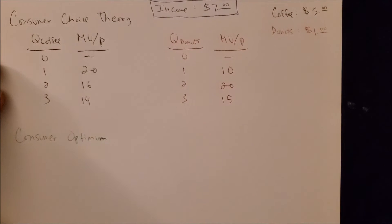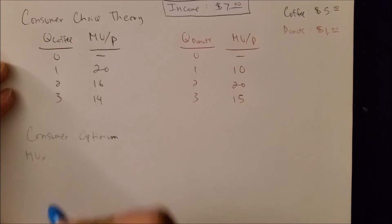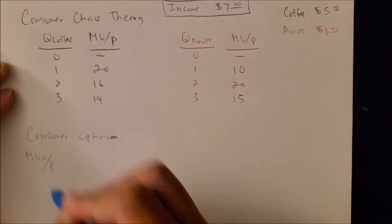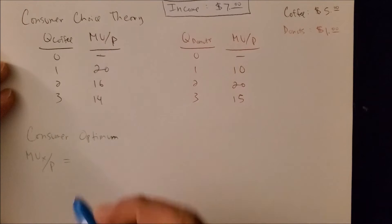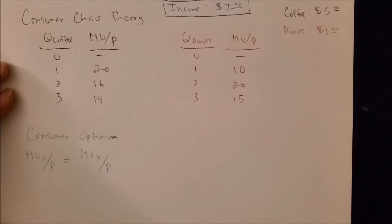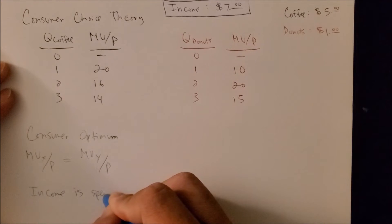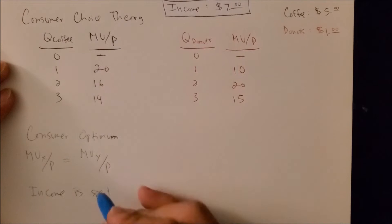When you think about consumer optimum, it looks at two or more goods where we are able to completely use all of the income we are given, and the last unit consumed is going to equal each other. In other words, consumer optimum is given in this expression: the MU of one good over price equals the MU of another good over price—the last unit consumed—and all of the income is spent.